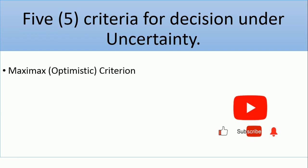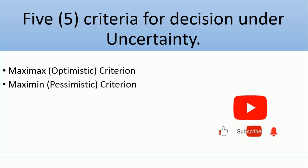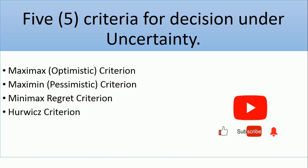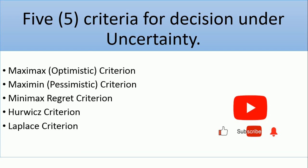We have the five criteria for decision under uncertainty: we have the maximax, also known as optimistic; the maximin, also known as pessimistic; the minimax regret; the Hurwicz; and the Laplace.